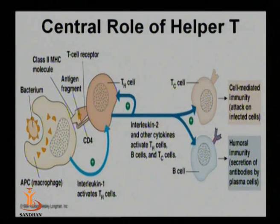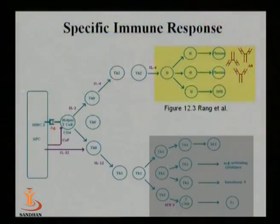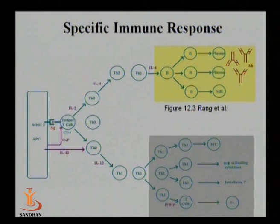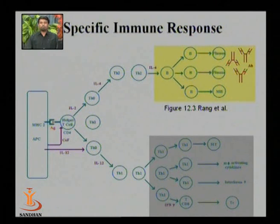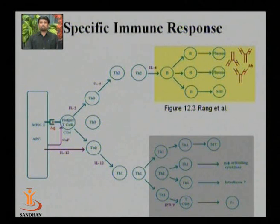T helper cells have a central role in both cell-mediated and humoral immune response. T helper cells are activated with the help of antigen-presenting cells. Whenever antigens enter a host, the host processes these antigens, separates antigenic peptides, and these peptides are displayed through MHC class 2 proteins by antigen-presenting cells toward T helper cells.